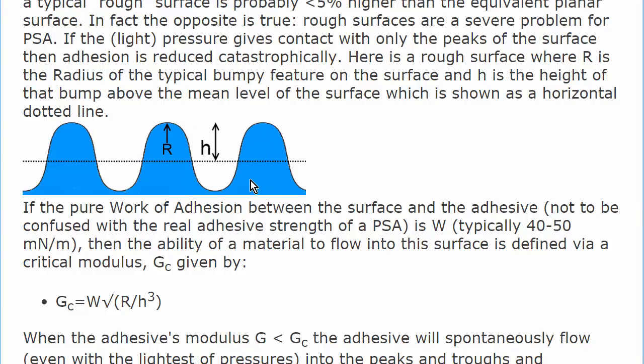Given that you have this rough surface, then if you have a strong adhesive and try to push it into contact, no amount of pressure will get you good contact. But if the modulus of the adhesive is less than a critical value, GC, then the adhesive will spontaneously flow into the surface and fill all the nooks and crannies. This critical modulus depends on the work of adhesion and the square root of the radius divided by the cube of the height. You want the modulus to be less than this, so you want this to be as large a value as possible, because then you can have a high modulus adhesive which might help in other ways.